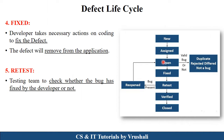If a particular defect is valid, they move to the fixed state. Here, the developer takes all necessary actions to solve the particular defects and errors in the project, ensures that all defects are removed, and sends this status to the tester.